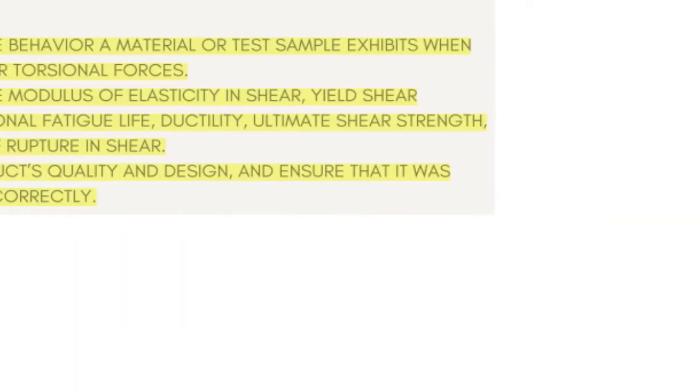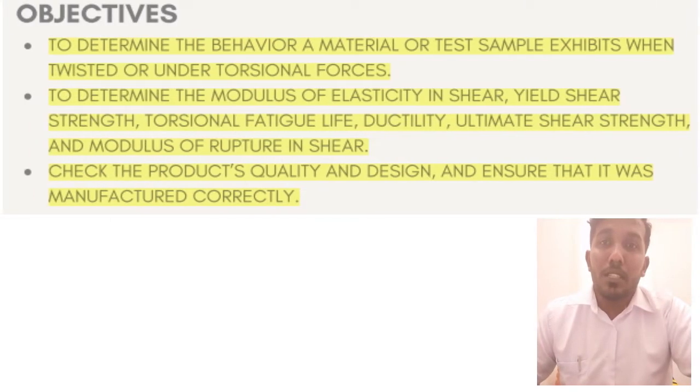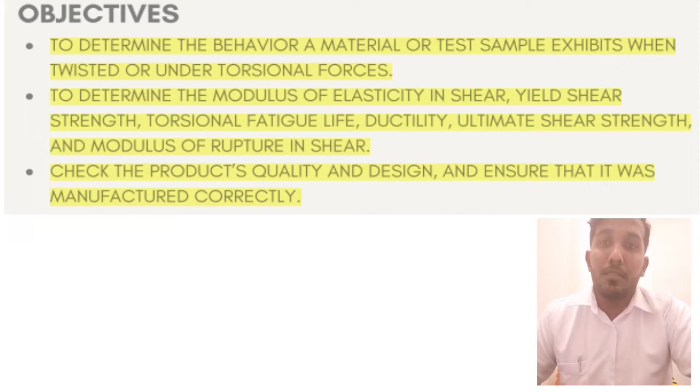So the objectives are to determine the behavior of material or test sample exhibits when twisted or under torsional forces. Second, to determine the modulus of elasticity in shear, yield shear strength, torsional fatigue life, ductility, ultimate shear strength and modulus of rupture in shear. Third, to check the product's quality and design and ensure that it was manufactured correctly.